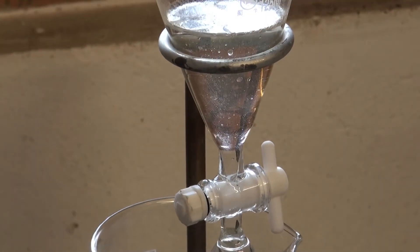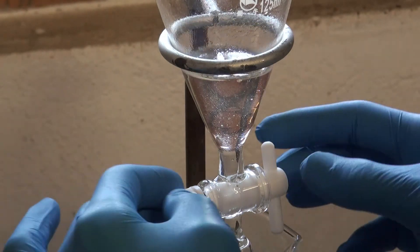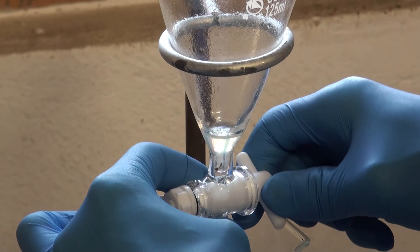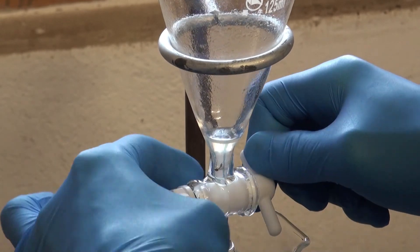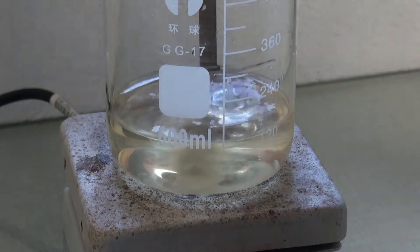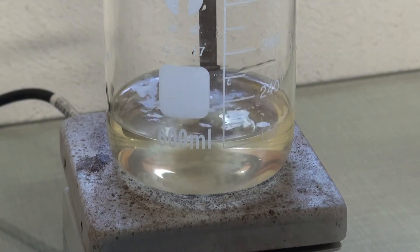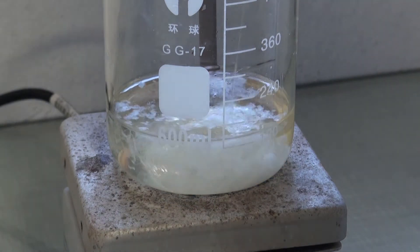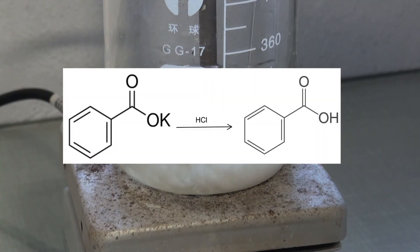The leftover organic layer was separated off and the aqueous layer was added to a beaker. To this hydrochloric acid was added. Directly after the addition, a white precipitate was observed. This is the water-insoluble benzoic acid.